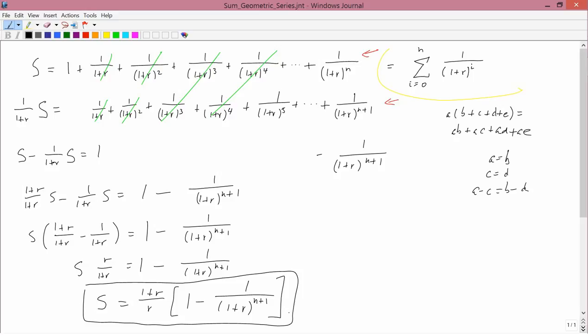It's also interesting to consider what is the limit of S as N goes to infinity. This would be the present value of an infinite stream of IOUs promising to pay you $1 every year. Now, as N goes to infinity, the limit as N goes to infinity is 1 plus R over R times 1 minus 1 over 1 plus R to the N plus 1. So as N goes to infinity, 1 plus R to the N plus 1 goes to infinity, and therefore this approaches 1 over infinity, which is 0.